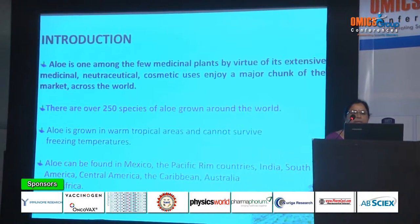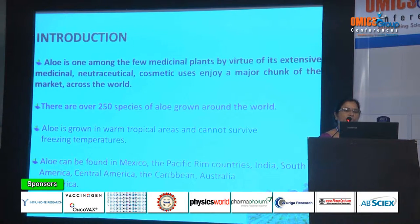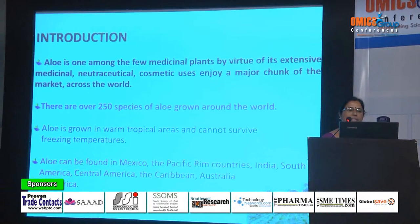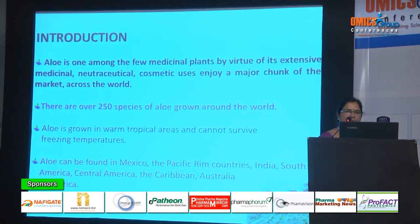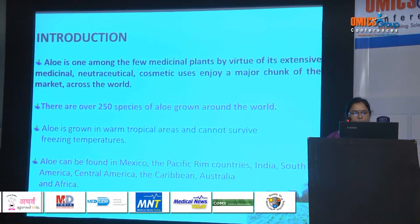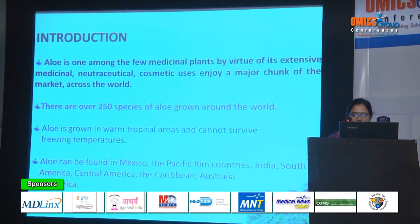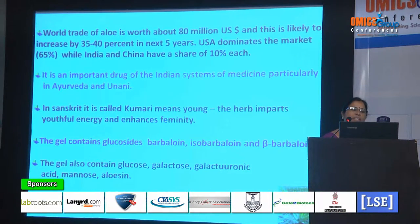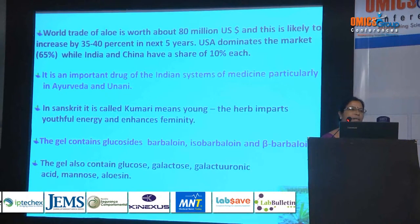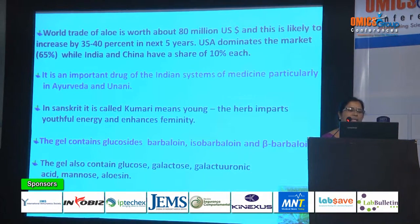Aloe is one among the few medicinal plants that, by virtue of its extensive medicinal, nutraceutical, and cosmetic uses, enjoys a major chunk of the market across the world. There are over 250 species of Aloe grown around the world. Aloe can be grown in warm tropical areas and cannot survive freezing temperatures. It can be found in Mexico, the Pacific Rim countries, India, South America, Central America, the Caribbean, Australia, and Africa. World trade of Aloe is worth about 80 million US dollars, likely to increase by 35 to 40% in the next 5 years. USA dominates the market with 65% share while India and China have a share of 10% each. It is an important drug of Indian systems of medicine, particularly in Ayurveda and Unani.